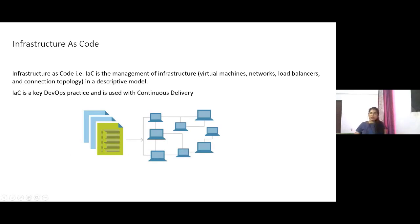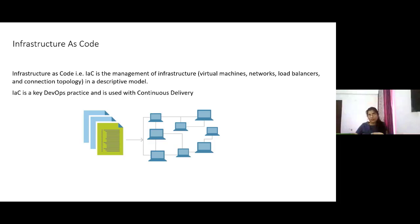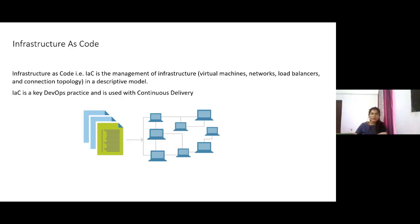Infrastructure as code is basically a way to manage your infrastructure. Whatever infrastructure you're going to create in Azure — be it virtual machines, networks, load balancers, containers, virtual networks, address spaces, subnets — you can do it in a descriptive way.